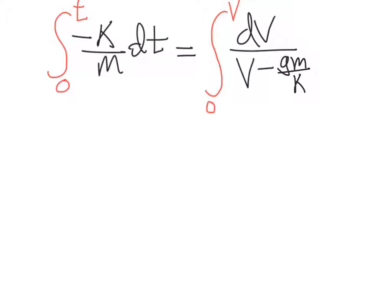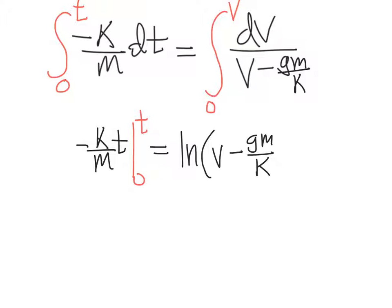So on the left side, when we integrate, we get minus k over m t. And the limits here are from 0 to t. On the right side, we get the ln, the natural log of the stuff that's on the bottom, which is v minus gm over k. And we're doing this from 0 to v. The next step is plug in the top. So I'm going to take this t, plug it in. We get minus k over m t. And then we have to subtract from that the value that we get when we plug in the bottom 0 to t. Well, when we plug in 0 to t, we just get 0. So that works out to be a 0 on the left side.